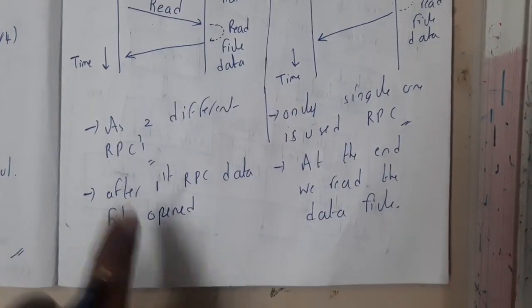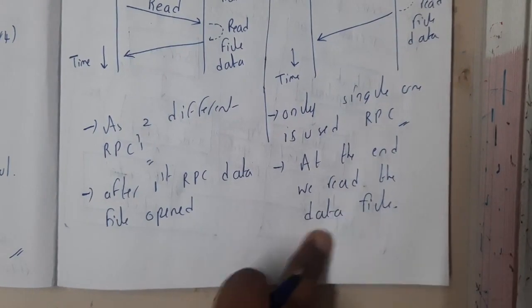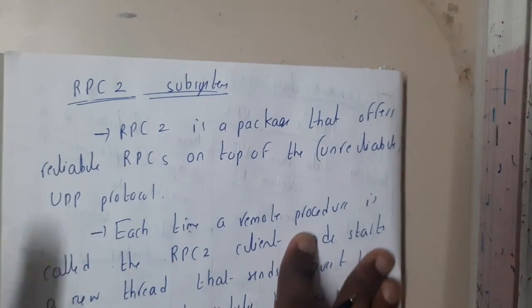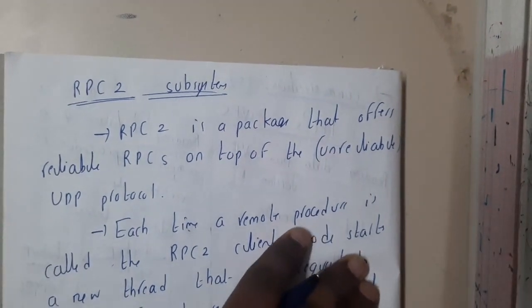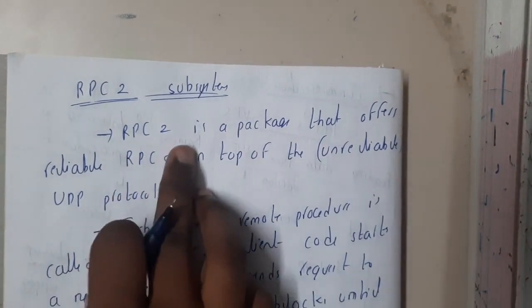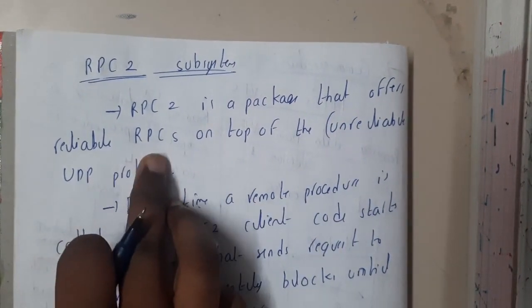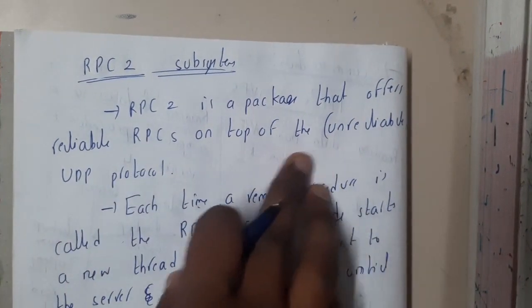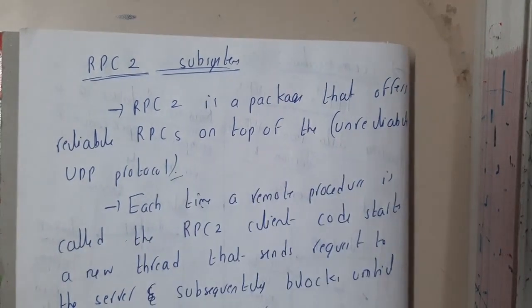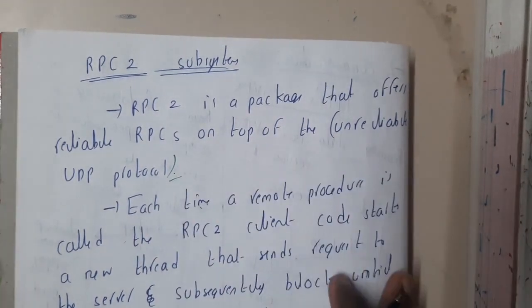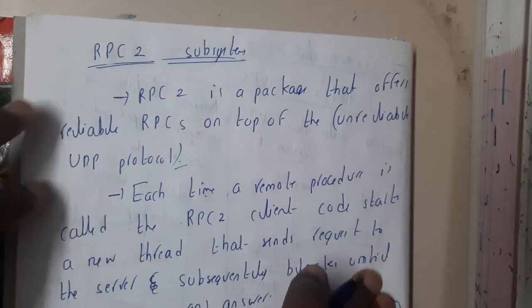Moving on to RPC2 subsystems. RPC2 is a package that offers the reliability of RPCs on top of the unreliable UDP protocol. Basically UDP is user datagram protocol which is used in wireless. That is the reason why it is not more reliable when compared to TCP.